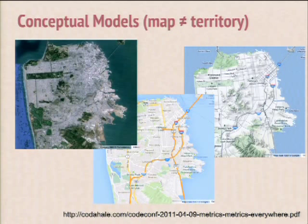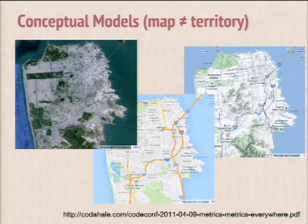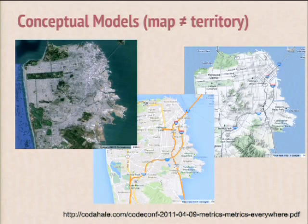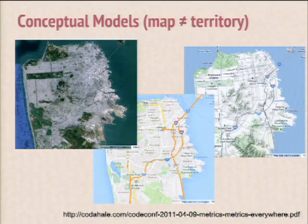The Korzybski experiment: which one of these is San Francisco? None of them, or all of them. These are different representations of San Francisco — one has terrain, one has streets, one is a photograph. They all have different layers of data. None of these are actually San Francisco. Sensu is one tool, and the more complex the system, the harder you have to work to build these conceptual models. A couple of years ago with cloud systems, and now with containerization, the territory got a lot harder to map.